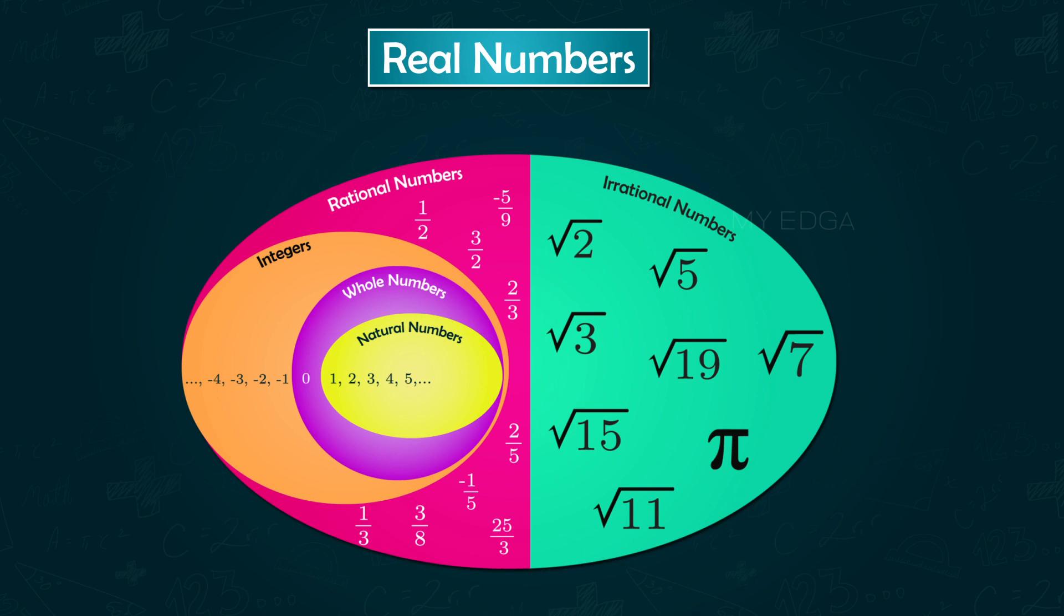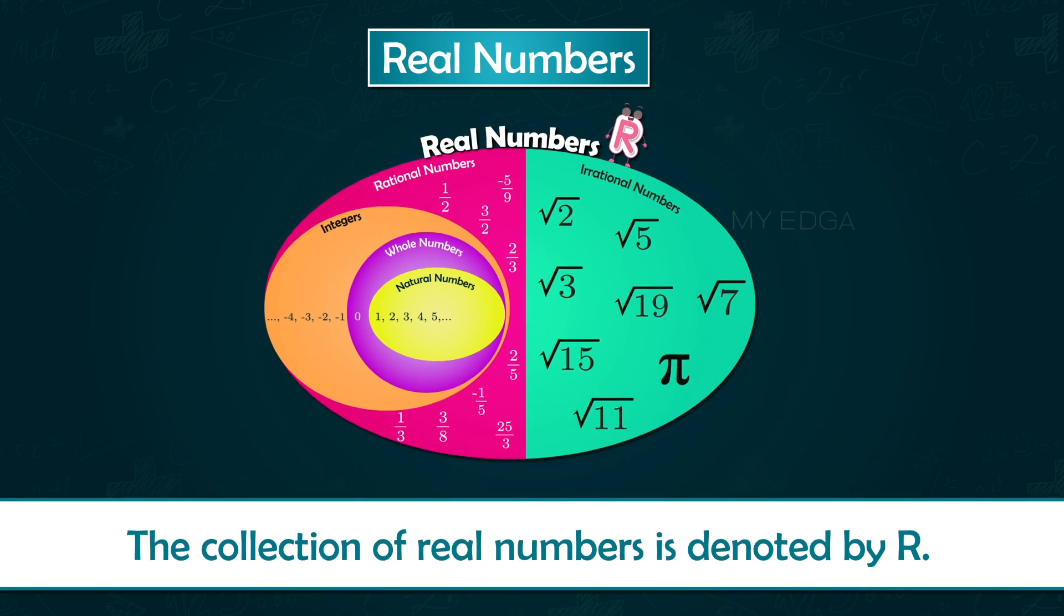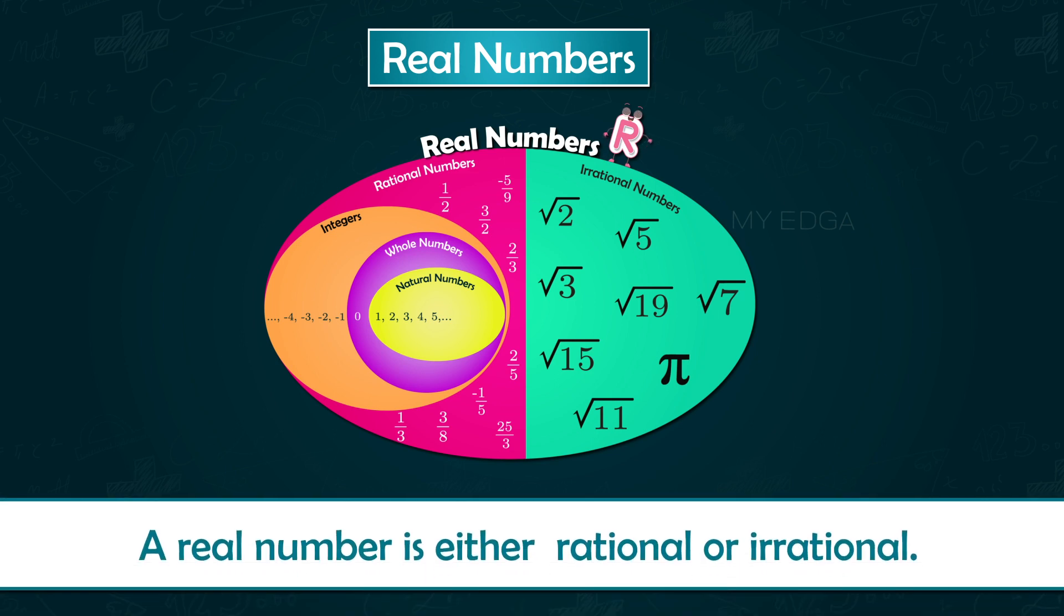Real numbers are denoted by the symbol R. Therefore, a real number is either rational or irrational.